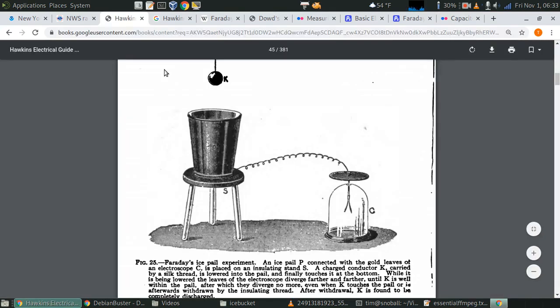This picture is from a 1917 physics textbook called the Hawkins Electrical Guide. It's describing an 1840s experiment by Michael Faraday, which we can use today to measure the charge on an object. This is a metal ice bucket and Faraday has connected the outer surface to an electroscope. It's insulated from the ground and he's going to lower this ball K, which has a positive charge into the bucket.